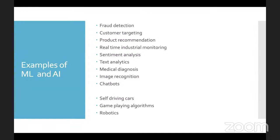Customer targeting is also very popular. Based on a user's likes and dislikes — whether they are an IMDB user, a BookMyShow user, or a cricket fan — companies can do customer targeting and give them products they are likely to buy. For example, if someone regularly buys organic products, the system knows to show them new organic options with incentives. If someone orders pizza every alternate Sunday and skips a week, the system might offer a discount to bring them back.